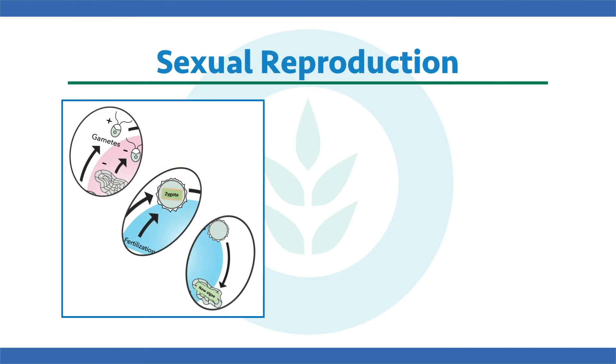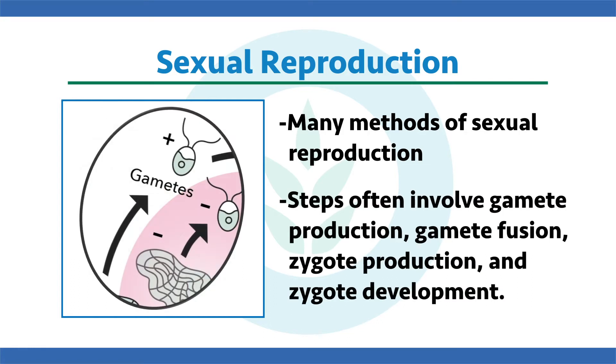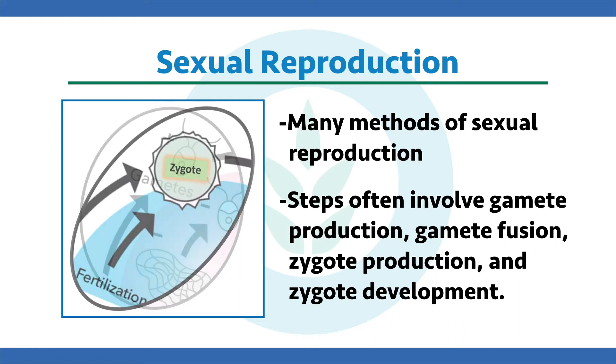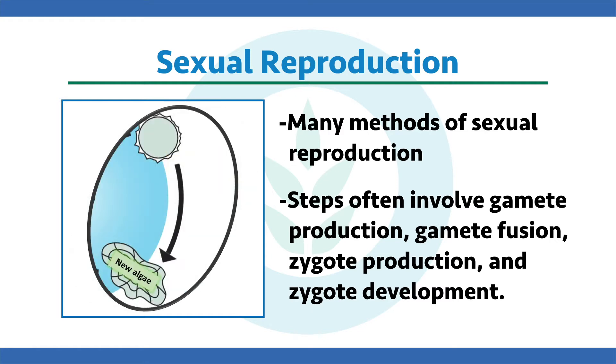Sexual reproduction, on the other hand, is very complex with a lot of different methods. Typically it involves gamete production — tiny haploid copies of the adults, some male and some female — then gamete fusion, zygote production, forming a fertilized egg, and then zygote development into new algae. In more detail, sometimes male and female gametes look the same; sometimes the female doesn't move and the male swims to fertilize it; sometimes they both look very different.